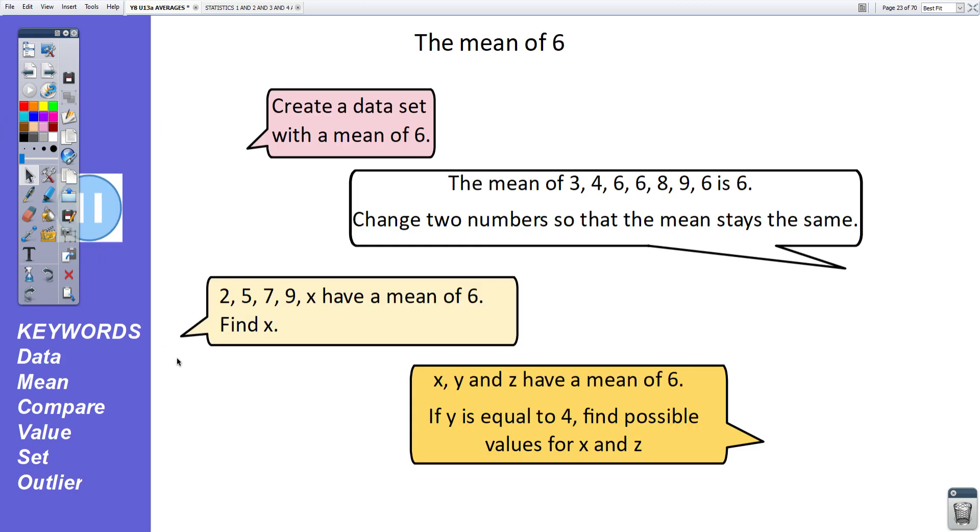Right, some questions to do with the mean now. First one, create a data set with a mean of 6. The second one, you're given a set of data values where the mean is 6. And you've got to change two numbers so that the mean stays the same. Third question, you're given a set of numbers that have a mean of 6. And you've got to find the missing one. And the final question, x, y, and z have a mean of 6. If y is equal to 4, find possible values for x and z. What I'll do with these is pause it in a moment or two. And then I'll give you some hints to help you with any questions that you may not have been able to answer. So pause the video, please, and have a go yourself first.